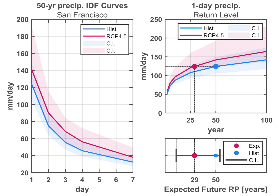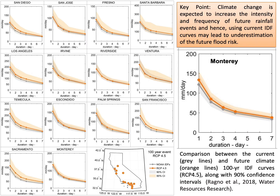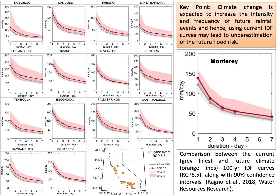We have done this for different locations around the U.S. and many California cities. In some places, the future and past projections are similar, like in Riverside. But in other places, like San Diego or Sacramento, we see a big difference between future projections and historical observations. In all these figures, the gray line is based on NOAA IDF curves.